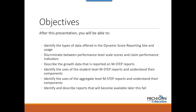In this presentation, I will begin by building some background regarding the type of data included in the reports on the dynamic score reporting site, as well as the difference between the overall performance levels and the claim performance indicators provided on the English Language Arts and Mathematics reports. I will review the different types of data in the various reports, discuss growth data, show what data is included in the student-level and aggregate-level M-STEP reports, and discuss the reports that will become available later this fall.